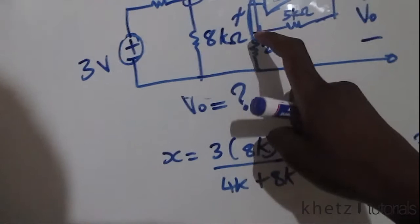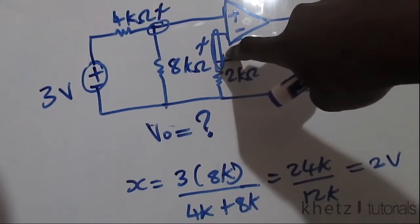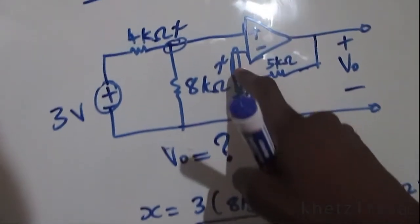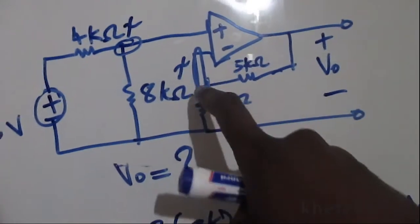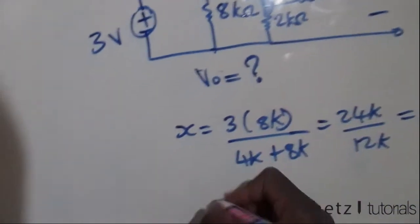At this point we are going to do nodal analysis to ultimately find the value of VO. Since there isn't any current flowing into the negative terminal, I only have to worry about that current and that current over there.